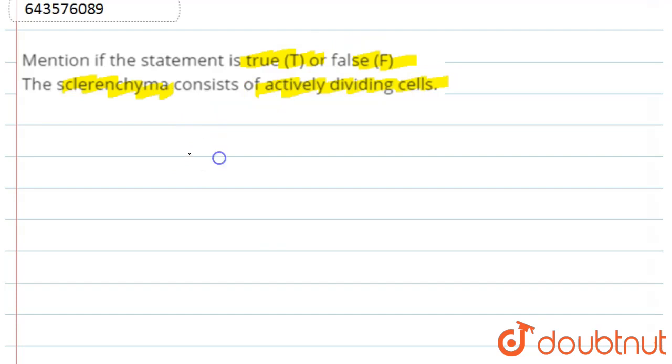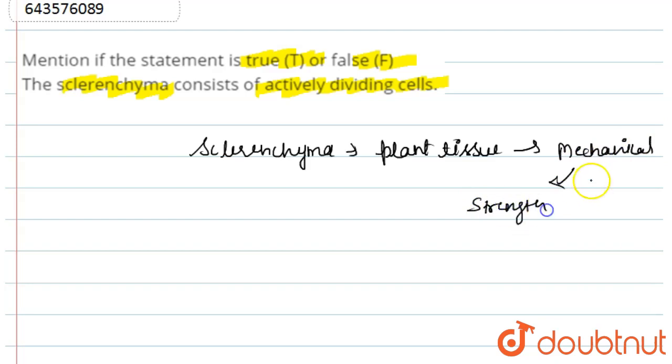So first of all, we have to know what is sclerenchyma. Basically, it is a plant tissue which provides mechanical strength and stiffness.